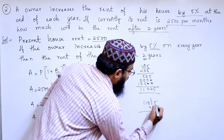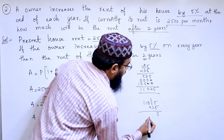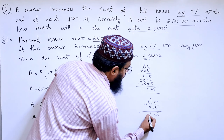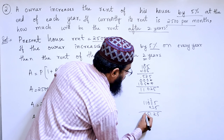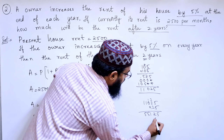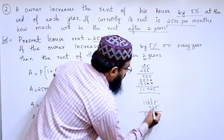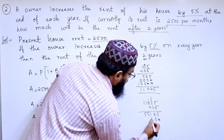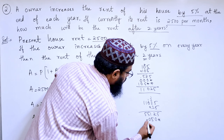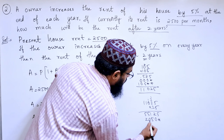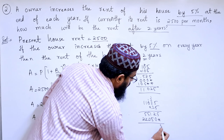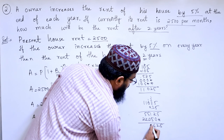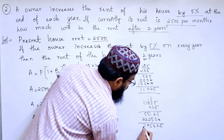So: 5 times 5 is 25. 5 times 2 is 10, plus 2 is 12. 5 times 0 is 0. 5 times 1 is 5. 5 times 1 is 5. So 2 times 5 is 10. 2 times 2 is 4 plus 1 is 5. 2 times 0 is 0. 2 times 1 is 2. 2 times 1 is 2. Adding up: 5, 2, 6, 5, 7, 2. So the result is 275,625.